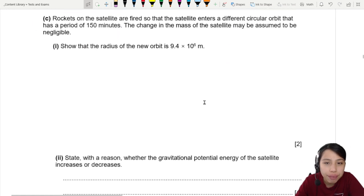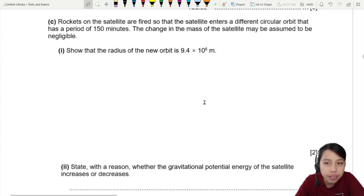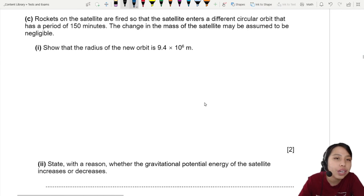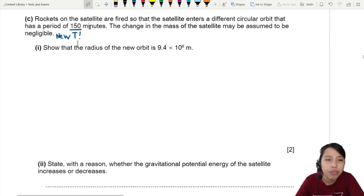Rockets on the satellite are fired so that the satellite enters a different circular orbit that has a period of 150 minutes. So we have changed the T, new T. The change in mass is assumed to be negligible. You know why they say that? Because if you are firing rockets, you burn out some fuel, so you technically do become lighter. But never mind, it's negligible, we don't care.